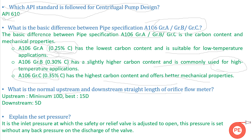The next question is: what is the normal upstream and downstream straight length for an orifice flowmeter? To obtain a correct reading, the upstream straight length should be a minimum of 10D, with 15D being ideal. The downstream straight length should be a minimum of 5D. If we maintain these upstream and downstream lengths, our orifice flowmeter will give accurate readings.